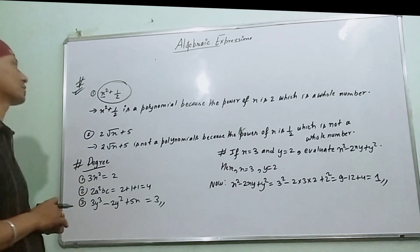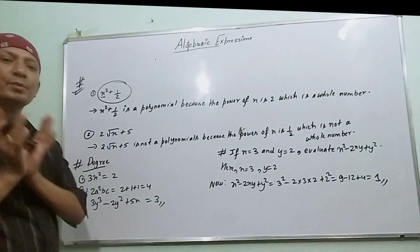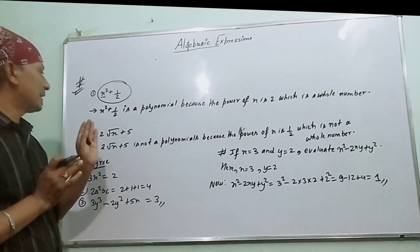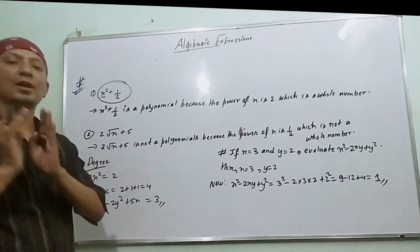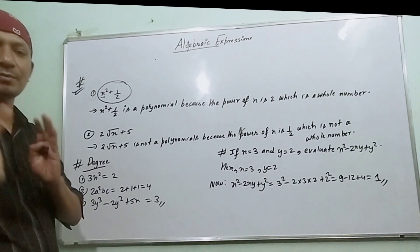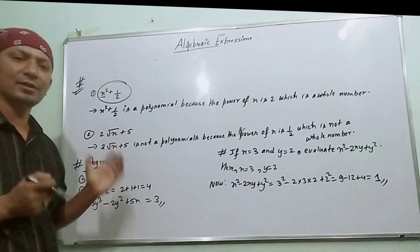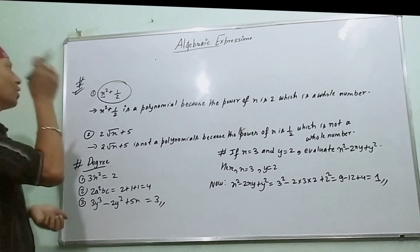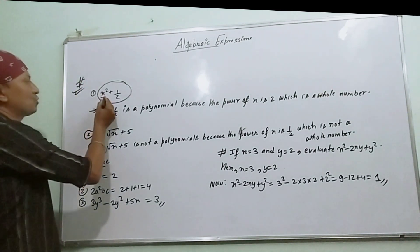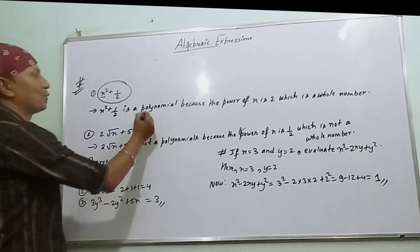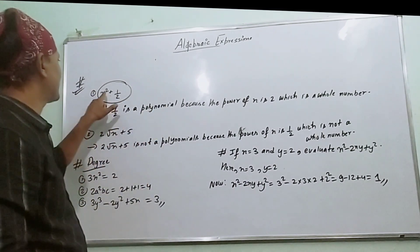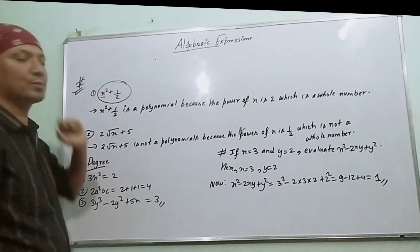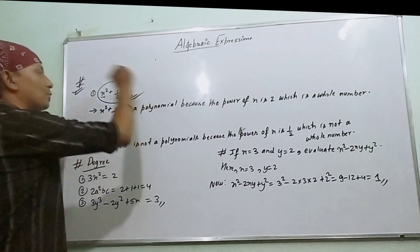For an expression to be a polynomial, the power of x must be a whole number. If the power is a fraction or negative, it's not a polynomial. Let me check: x² + 1/2 is a polynomial because the power of x is a whole number, which is 2.